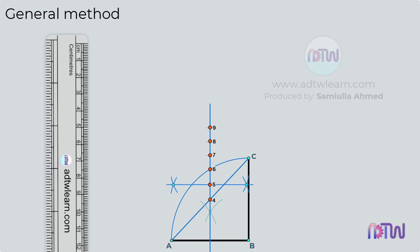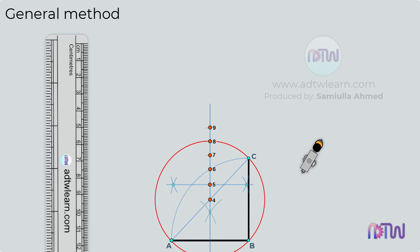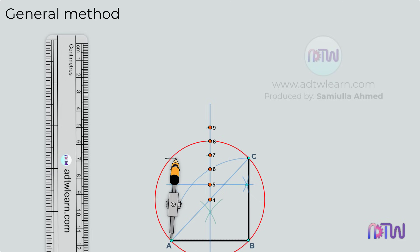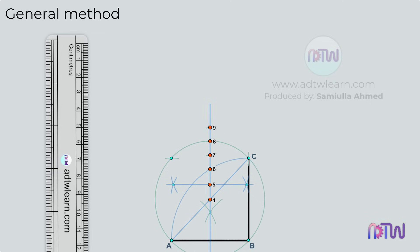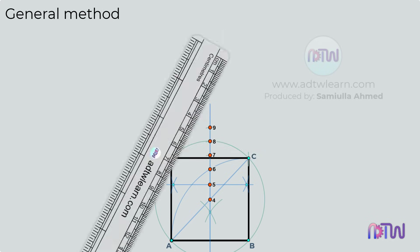If we draw a circle using the length between point 4 and A, we will get a square. Adjust the compass to the length between 4 and A, and draw a circle using point 4 as a center. Then take the length of side AB on the compass and cut arcs on the circumference of this circle. Join these points to get the square.